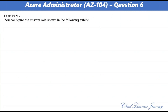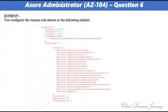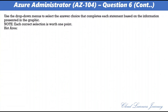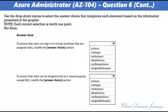Question 6. You configure the custom role shown in the following exhibit. The role name is Role1, role type is custom, and assignable scope is set to a subscription ID. Use the drop-down menus to select the answer choices that complete each statement. For the first answer area: to ensure that users can sign in to virtual machines assigned Role1, modify the role types. You need to configure Azure RBAC policy to determine who can log in to the VM. Two Azure resources are used to authorize VM login: Virtual Machine Administrator Login and Virtual Machine User Login.